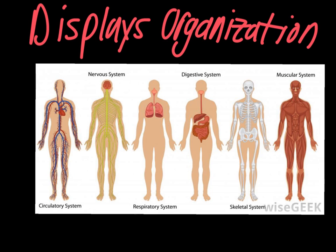Think about your circulatory system, which supplies your entire body with oxygen and other nutrients. Your nervous system allows your brain to control all of your functions — there are even things that bypass your brain, like when you touch a hot stove and jerk away from that surface. Your respiratory system is used for breathing, your digestive system breaks down your food, and your skeletal system is very important for movement. The muscular and skeletal systems are obviously tied closely together. All living things display some type of internal organization, whether it's a complicated system like ours or something simple like single-celled organisms have.